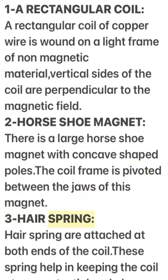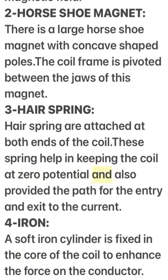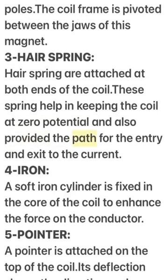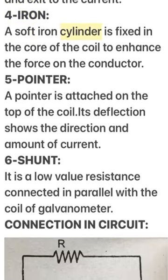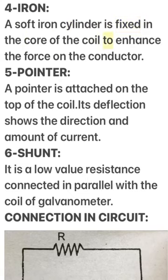3. Hairspring: Hairsprings are attached at both ends of the coil. These springs help in keeping the coil at zero potential and provide the path for entry and exit of current. 4. A soft iron cylinder is fixed in the core of the coil to enhance the force on the conductor. 5. A pointer is attached on the top of the coil; its deflection shows the direction and amount of current. 6. Shunt: It is a low-value resistance connected in parallel with the coil of the galvanometer.